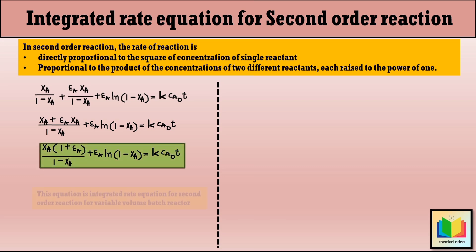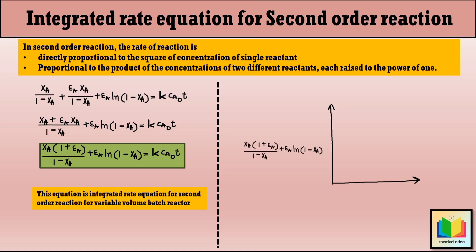The integrated rate equation for a second order reaction in a variable volume batch reactor (2A → products) is: XA(1 + εA)/(1 − XA) + εA·ln(1 − XA) = kCA0·t. If we plot [XA(1 + εA)/(1 − XA) + εA·ln(1 − XA)] versus t, we get a straight line with slope equal to kCA0.